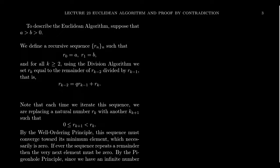Like the division algorithm, we used the well-ordering principle to show the quotients and remainders exist, but it doesn't tell you how to find them — you have to use long division for that. Similarly, how do we find the coefficients R and S, and the GCD, which are guaranteed to exist? We turn to the Euclidean algorithm, named after the famous ancient mathematician Euclid. What we describe in modern terms as the Euclidean algorithm was described in Euclid's classic text, The Elements, which is thousands of years old and represents the first steps toward modern advanced mathematics.